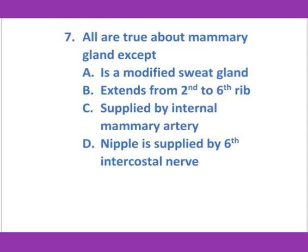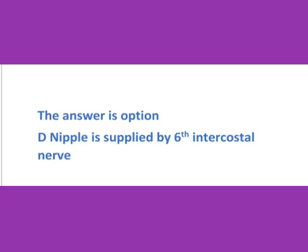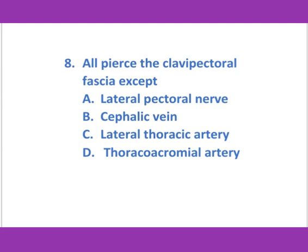All are true about the mammary gland except — (a) it is a modified sweat gland, (b) extends from second to sixth rib, (c) supplied by internal mammary artery, (d) nipple is supplied by sixth intercostal nerve. The answer is option D: nipple is supplied by sixth intercostal nerve.